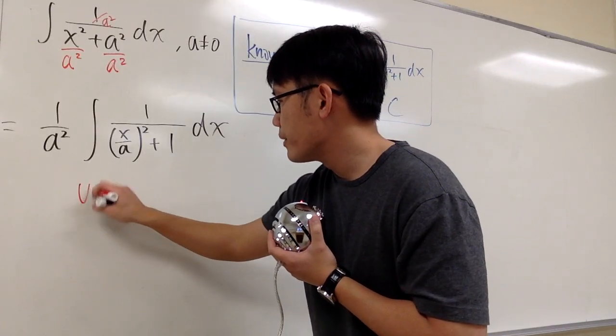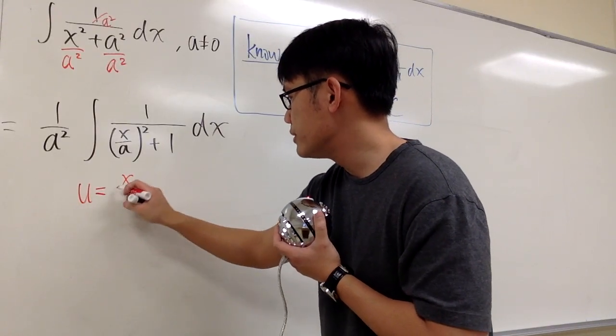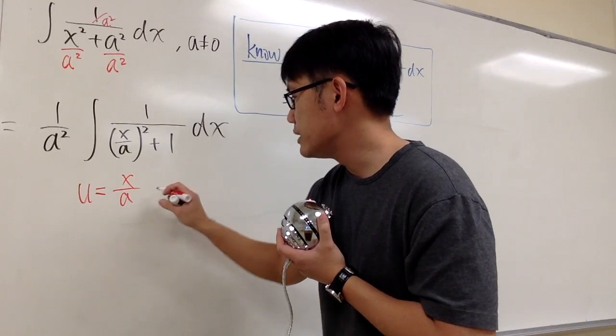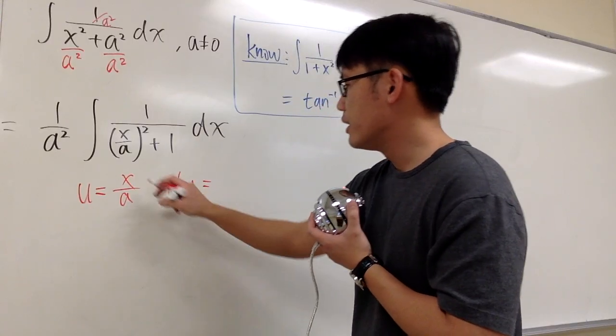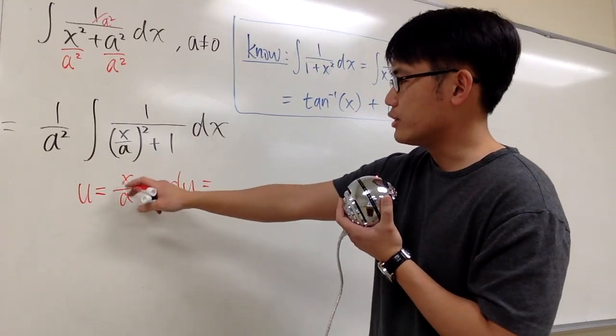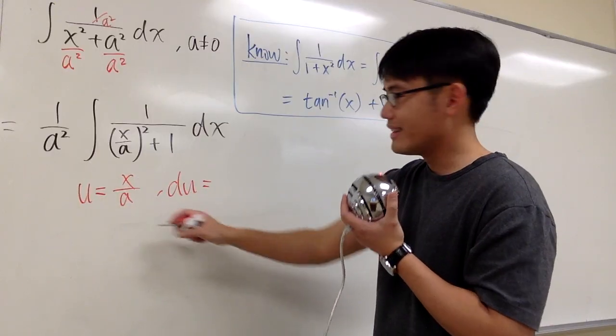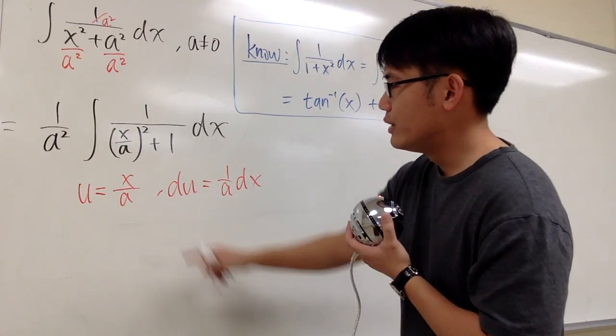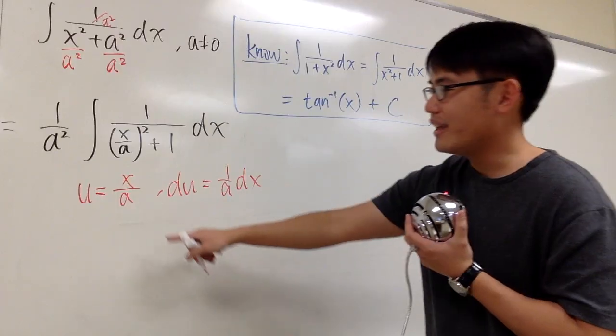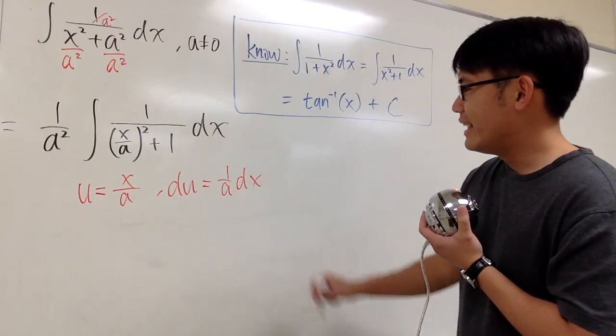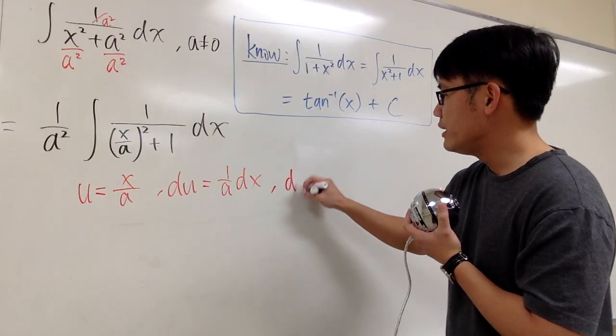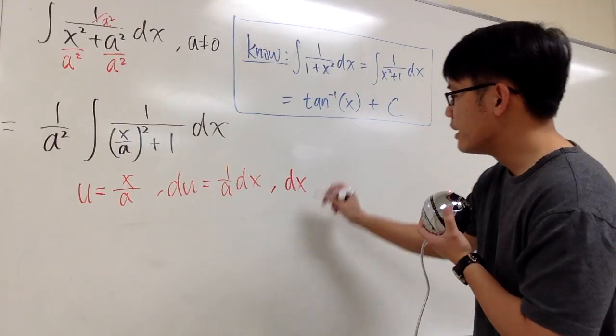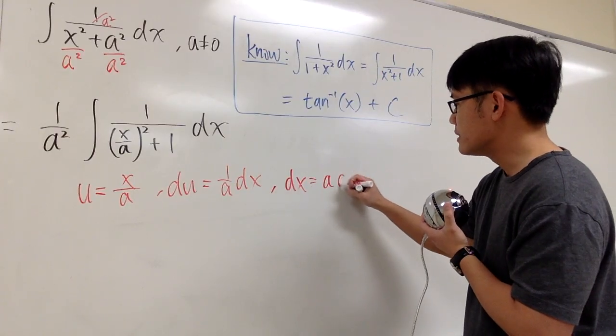And I'm going to let u equal to the inside function, which is x over a, and then we will see that du will be, well, this is just 1 over a. So 1 over a, dx. Remember, this is not a quotient rule situation, a is just a number. And then to solve for dx, we know dx, I can multiply both sides by a, so dx will be a times du.